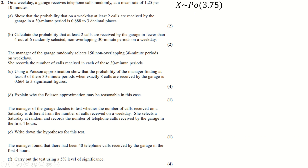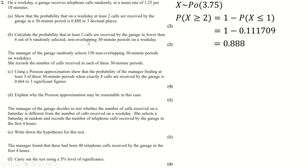We're looking for the probability of at least two calls, i.e. P(X ≥ 2) = 1 − P(X ≤ 1). Using the Poisson cumulative distribution function on the calculator with lambda = 3.75, we get the numerical result.